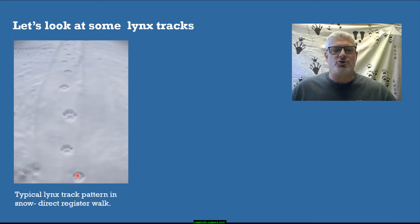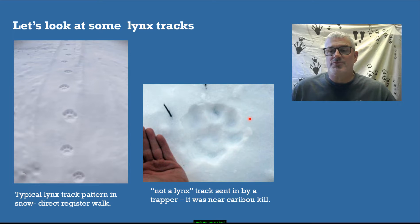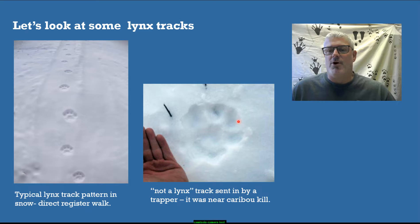This is a typical lynx gait — they usually walk in a direct register walk where the hind foot lands in the same place the front foot was. They have a pretty short stride and a wide straddle because they're walking. This widely splayed track was sent in by a trapper near a caribou kill; he was convinced it was a mountain lion because of the size. I tried to point out the very small metacarpal pad and the four very small toe pads as the identifying characteristics.